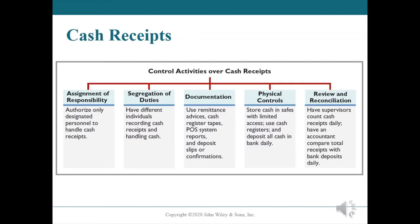Each day, a separate employee can compare the amount of cash deposited per the deposit slip with the amount of cash receipts recorded that day. The control activities over cash receipts include: assignment of responsibility — authorize only designated personnel to handle cash receipts; segregation of duties — have different individuals record cash receipts and handle cash; documentation — use remittance advice, cash receipts, POS system reports, and deposit slips; physical controls — store cash in safes with limited access and deposit all cash in bank daily; and review and reconciliation — supervisors count cash receipts daily and an accountant compares total receipts with bank deposits.